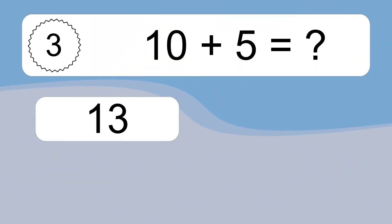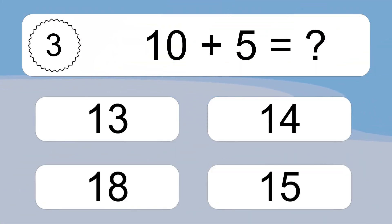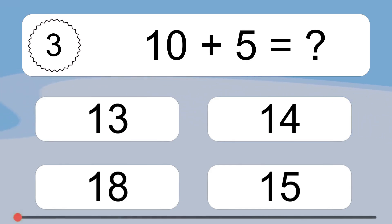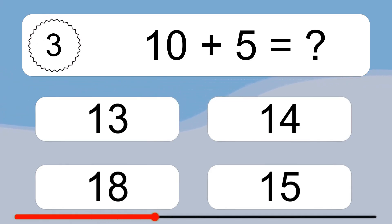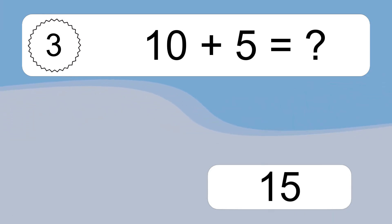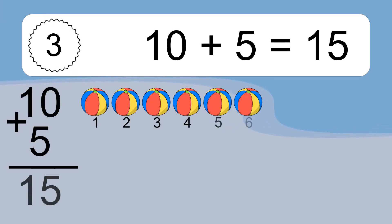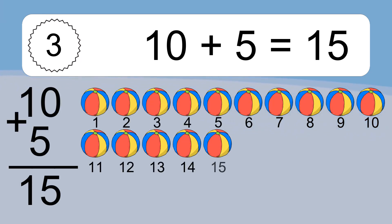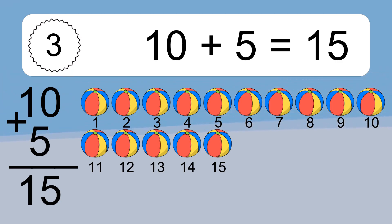10 plus 5 equals what? 10 plus 5 equals 15. Let's count it: 1, 2, 3, 4, 5, 6, 7, 8, 9, 10, 11, 12, 13, 14, 15.